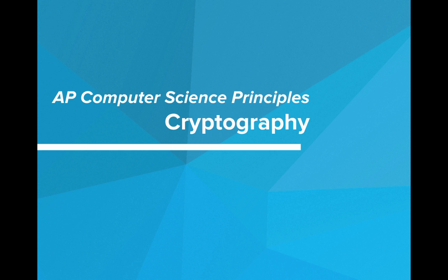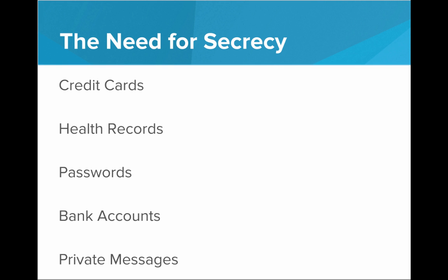Why would we need that? Why do we need to keep information secret? Well, the internet is an open place. When you're sending digital information over the internet, those bits — those zeros and ones — can be read by anyone. Yet we're sharing a lot of really sensitive information over the internet: our credit card information, health records, passwords, bank accounts, private messages. All of this information can be picked up by someone who's listening. So we need a way to keep this information secret when we're sending it over the internet. This is where cryptography comes in.